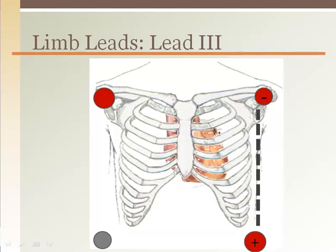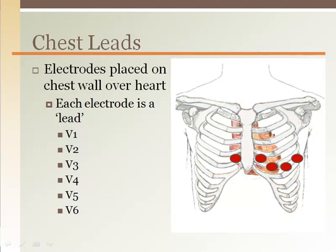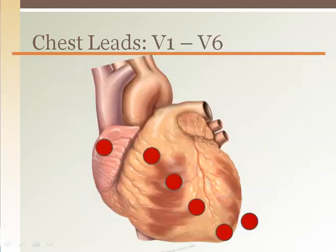Lead III is not used as much as Leads I and II. The negative electrode is on the left shoulder and the positive electrode is on the left hip. Although each lead has a different configuration, the resulting electrocardiograms are very similar, primarily differing in wave amplitude or size. Chest leads are placed on the chest wall directly over the heart. The pattern of electrode placement is designed to maximize coverage of the heart based on its orientation in the chest, and there are six electrodes for the six leads named V1 through V6. Because these leads are closely associated with a specific region of the heart and have a different view of it, the resulting electrocardiogram waveform will not be the same.